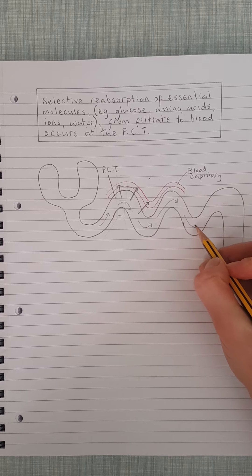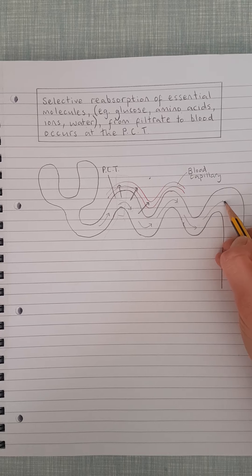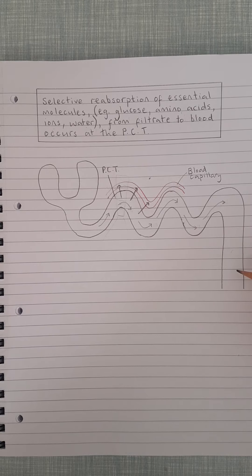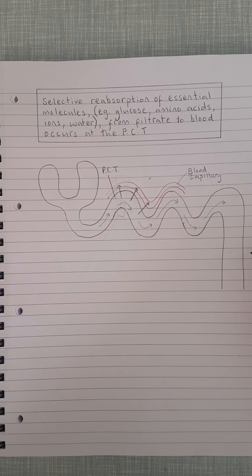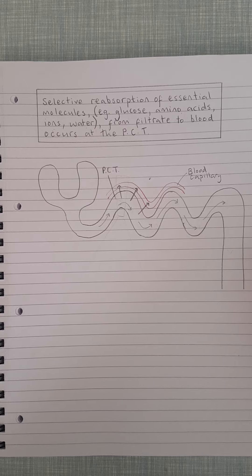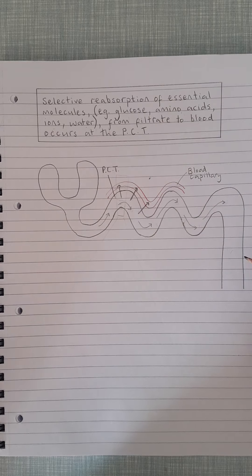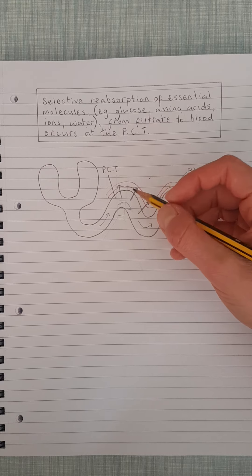To eventually going through all of the nephron, which isn't all drawn here, down into the collecting duct, and then eventually it leaves the kidney and gets stored in the bladder as urine. So how does this absorption process happen?